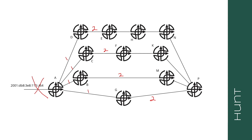P receives G's withdrawal. It's lost its shortest path, but it has alternate paths through M, K, and N. So it flips to its second best path, which is M. At T2, M becomes the best path for P to reach 110::/64 — even though that destination is no longer reachable anywhere on the network. At T3, F sends a withdrawal to K, E sends a withdrawal to H, and M sends a withdrawal to P. When P receives M's withdrawal, it falls back to its next best path, which is now through K. Notice each one of these steps requires a min route advertisement interval to complete.